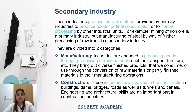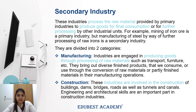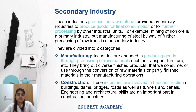The next industry is secondary industry. Secondary industries are all those industries which use the raw material given to us by primary industry, and then using that raw material produce goods which either serve for final consumption or for further processing by other industrial units. For example, when we extract iron ore, that is our primary activity, but when we manufacture steel from it by further processing the iron, that falls under the definition of secondary industry. Secondary industries are of two types: manufacturing and construction. Manufacturing industries are those that produce goods from raw materials, such as transport equipment, furniture, etc.